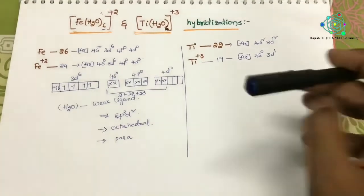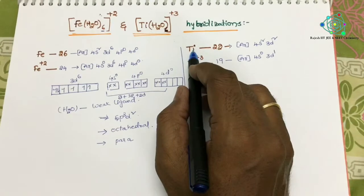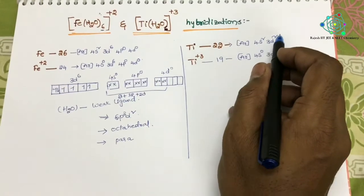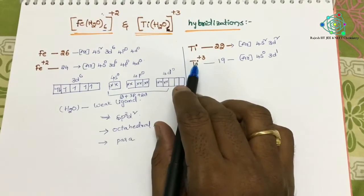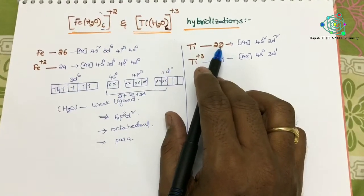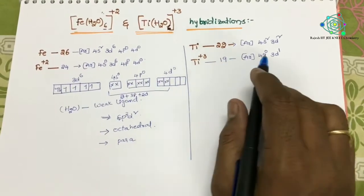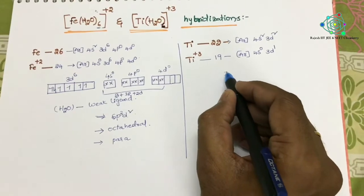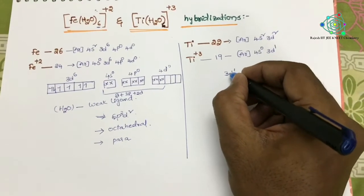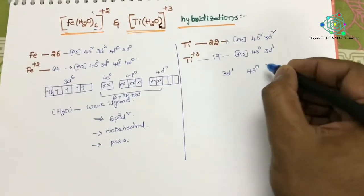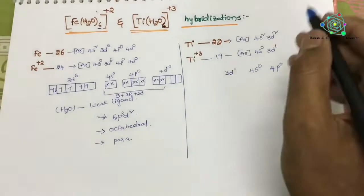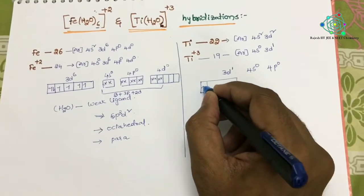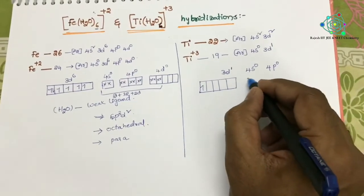Next, coming to the second complex. Here Ti is the central atom with atomic number 22. Its electronic configuration is [Ar] 4s² 3d². Its oxidation state is plus 3, meaning it should lose 3 electrons from the 22 electrons, becoming like a 19-electron species. So now: 4s = 0, 3d = 1. That means if you write in order, the d orbital has only one electron, 4s is 0, and 4p is 0.